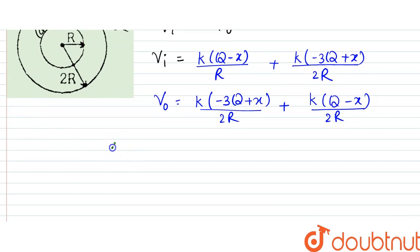So when we equate this, therefore Vi is equal to Vo. Finally, so therefore from here what we would get is this and this gets cancelled. So we are left with k(Q - x)/R would be equal to k(Q - x)/2R. So from here, Q minus x and Q minus x, k and k gets cancelled.